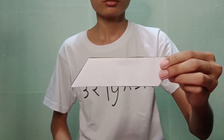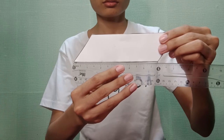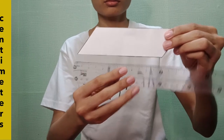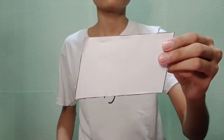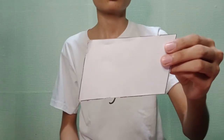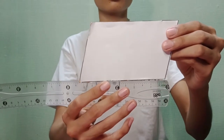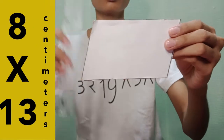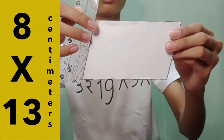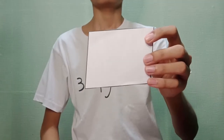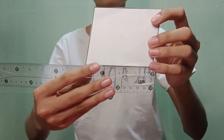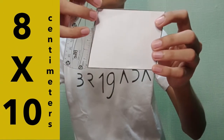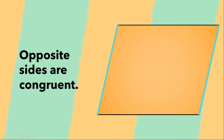First, we have parallelogram A. After measuring each side individually, I found out that these sides are both 15 cm, and these sides are 5.5 cm. Next, we have parallelogram B. After measuring, I found out that these sides are both 13 cm, and these sides are both 8 cm. We now know that the property 'any two opposite sides are congruent' is true.